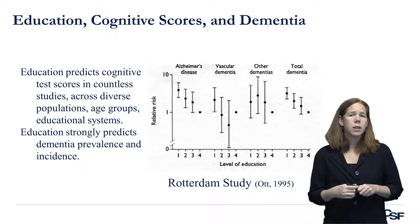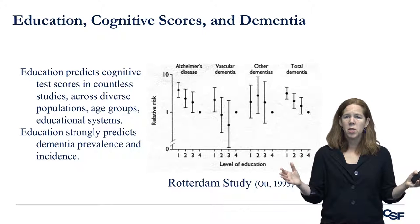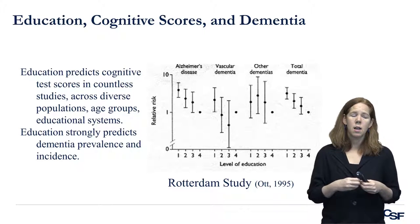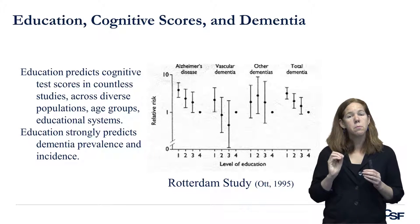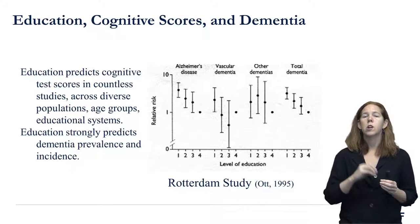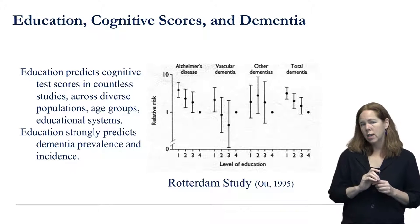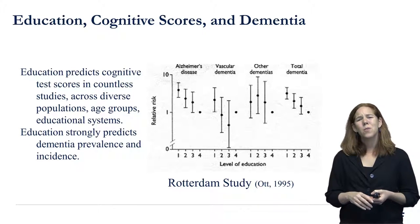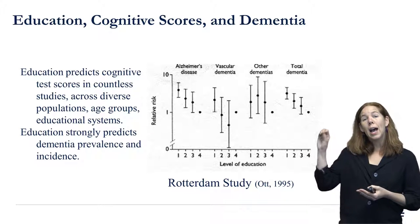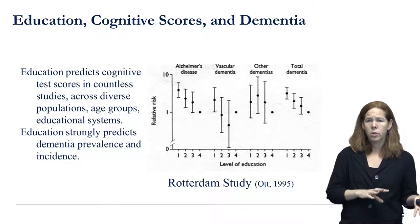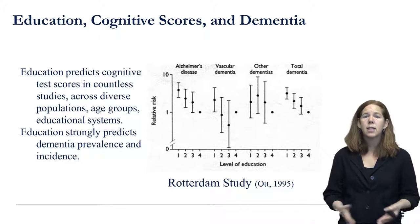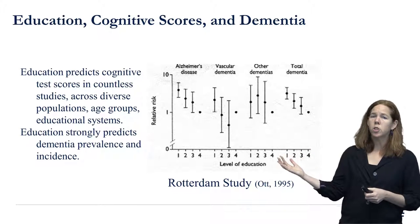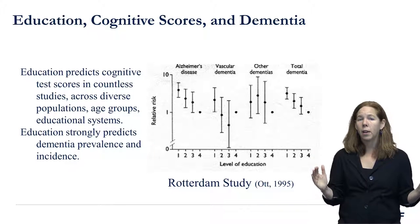We've known for a very long time that Alzheimer's disease and dementia are less common in people with more education. People at all levels of education do develop Alzheimer's disease, but there's a marked social gradient such that people with less education are at higher risk. That's true in almost every setting we've looked at, and remarkably even in settings with extremely different levels of education — for example, contrasting rural China where the high-education group has perhaps three years of education versus the Nun Study where the high-education group had PhDs and the low-education group had bachelor's degrees.